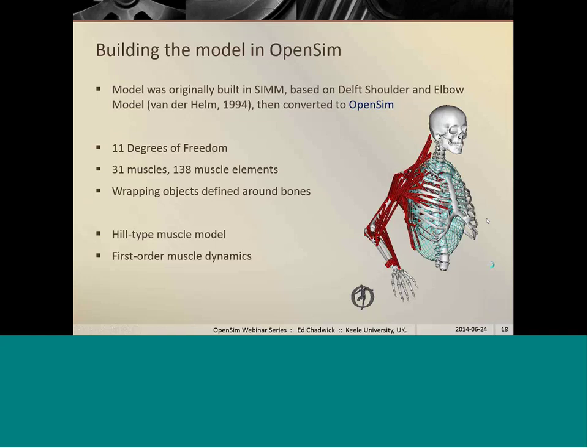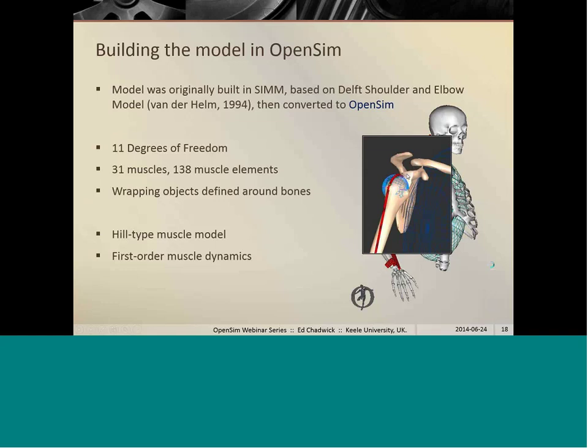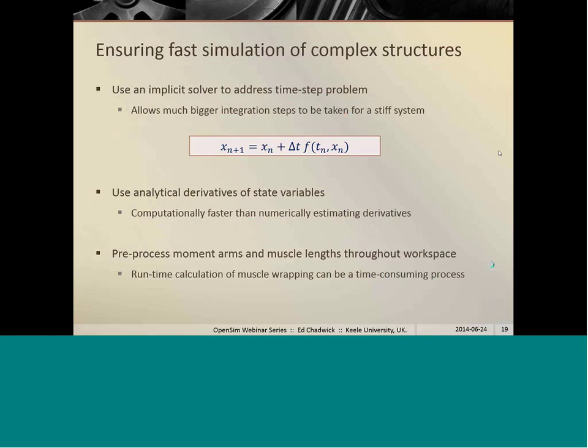And there are wrapping objects defined for all those muscles that don't have a simple straight line origin to insertion pathway. If we zoom in on the glenohumeral joint here, you can see an example of that. So I've taken out one muscle element and shown it wrapping around geometrical objects at the glenohumeral joint at the humerus. So this allows us to calculate by defining the pathway of the muscle wrapping around the bone. That allows us to calculate the moment arm of that muscle element for each position of the model. Finally, the muscle model itself is a Hill-type muscle model and we used first-order dynamics to represent the activation dynamics of the muscles.